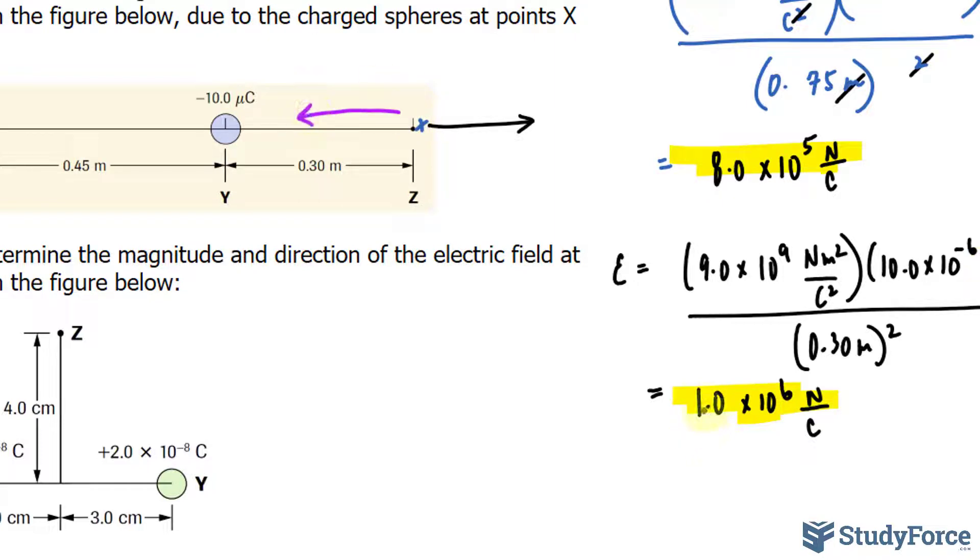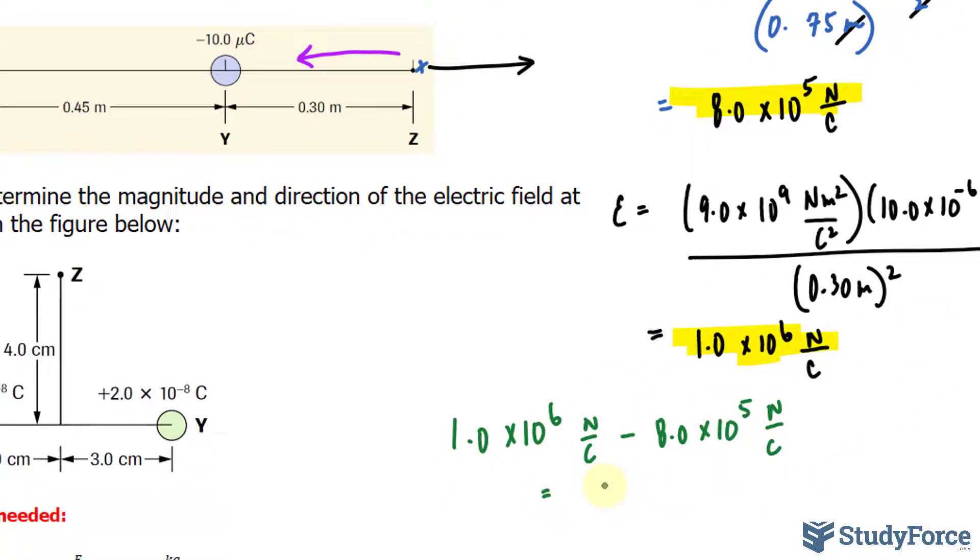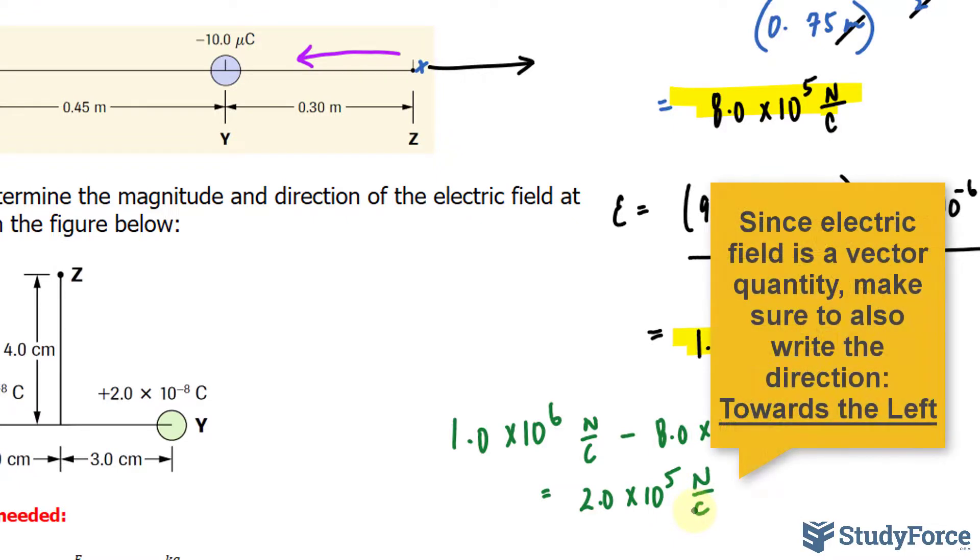This is going this way at this electric field, and it's also going that way at 800,000. The difference is 1.0 times 10 to the power of 6 newtons per coulomb minus 8.0 times 10 to the power of 5 newtons per coulomb. Subtracting these two numbers, you should end up getting 2.0 times 10 to the power of 5 newtons per coulomb. So you do have to use a little bit of mathematical intuition here when it comes to combining these two electric fields. And your final answer should be 2.0 times 10 to the power of 5 newtons per coulombs.